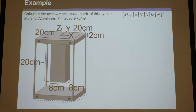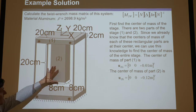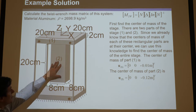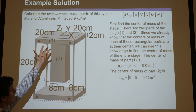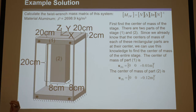First, find the center of mass. The mass of this whole stage would be found by finding the volume of each part times rho, then adding those together. Now we're going to find the center of mass of this T-shaped stage.